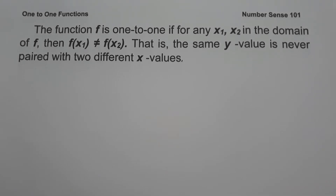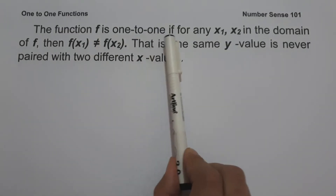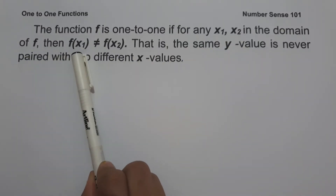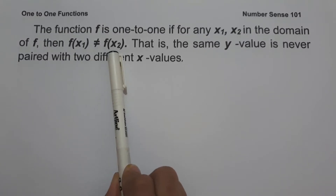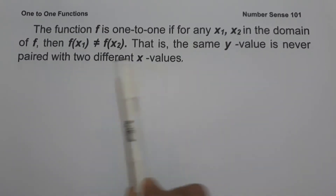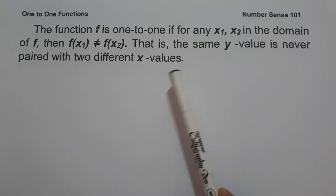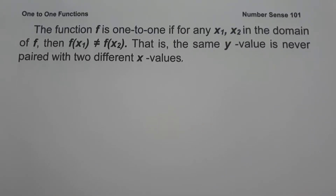For today's video we are going to talk about what is one-to-one functions. The function f is one-to-one if for any x₁ and x₂ in the domain, f(x₁) is not equal to f(x₂) — that is, the same y value is never paired with two different x values. We are going to use this idea to determine if a given example is a one-to-one function or not.